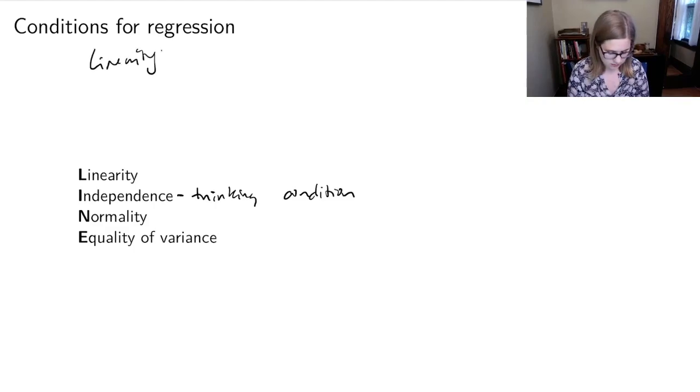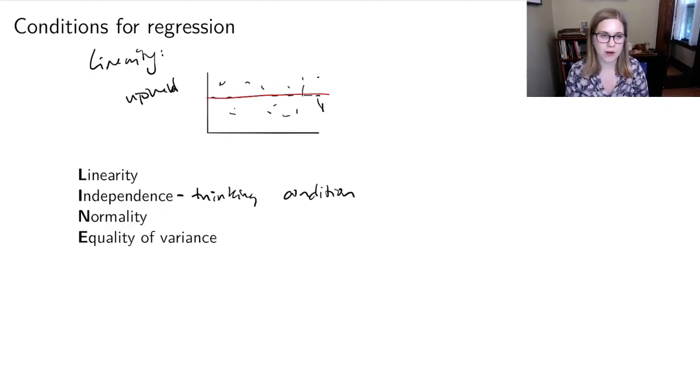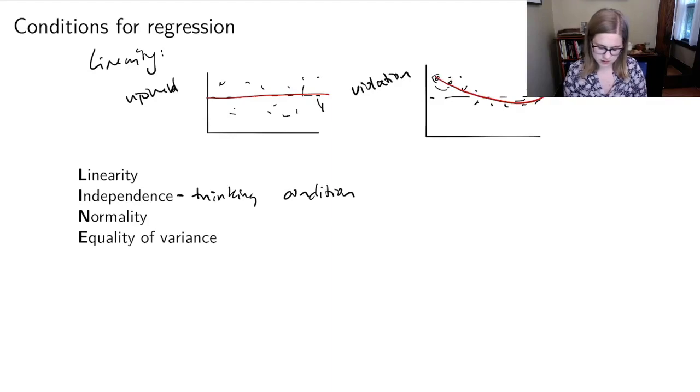So for linearity, when it's upheld, we should have in our residual versus fitted plot a dotted line in the middle with data all around that dotted line. Linearity being upheld, we'd have a nice straight red line right through the middle. A violation would be if we had our dotted line in the middle and then some residuals forming a really curved line. So that would be a bad plot for linearity, and that would be a good plot for linearity.